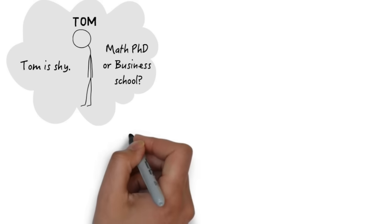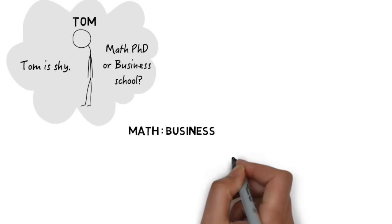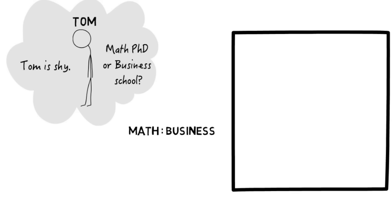There are a lot fewer math PhDs. The numbers vary from school to school, but it's something on the order of ten times as many business school students as math PhD students. So we have two pieces of information: many more business students than math students, and shyness being more common among math students. The question is how do we combine these two pieces to get one overall estimate about Tom? This is where Bayes' rule comes in.